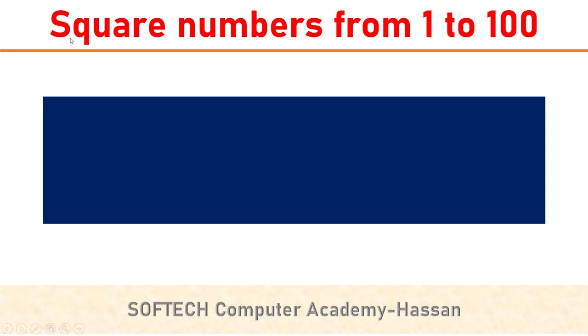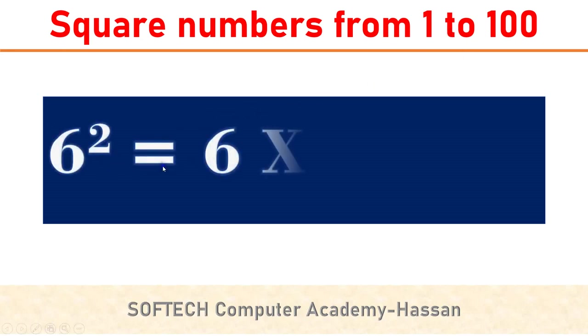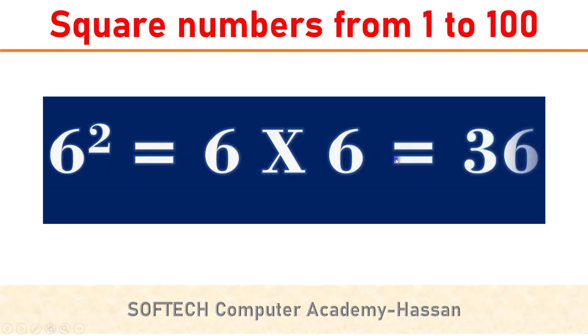Hi friends, today's topic is square numbers from 1 to 100. For example, 6 square is equal to 6 into 6, which is equal to 36.